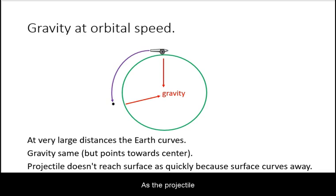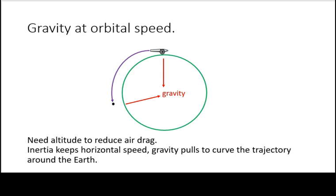As the projectile goes around the Earth, the direction of gravity still points towards the center, pulling the projectile towards it. What keeps the projectile moving forward parallel to the ground is just its inertia.